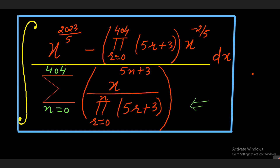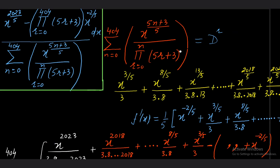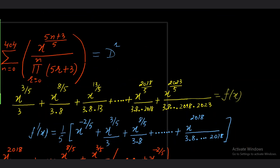After expanding the summation — shown in the yellow section — the denominator with n from 0 to 4 gives us: x^(3/5) upon 3, plus x^(8/5) upon (3·8), and so on. When n=1 we get r from 0 to 1, giving terms 3 and 8. I am naming this full expression as f(x). So f(x) is this large expression and it is our denominator.